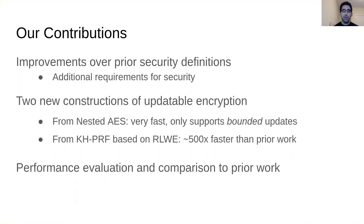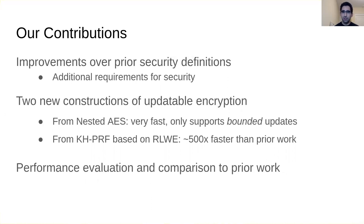Our contributions are: first, improvements over prior security definitions — in particular, an additional requirement that hides ciphertext age. In prior work you could look at a ciphertext and tell whether it was a fresh encryption or had been re-encrypted once, twice, or many times. We provide definitions that hide this information. We also have two new constructions: one from nested AES, which is very fast but supports only a bounded number of updates, and one from a key-homomorphic PRF based on ring LWE that is 500 times faster than prior work. Finally, I'll discuss our performance evaluation.